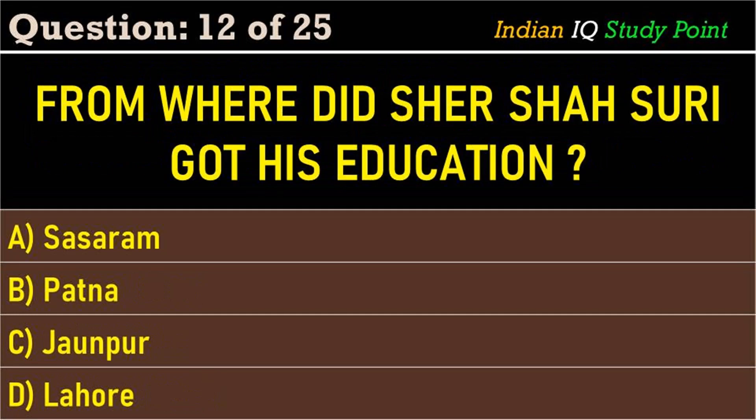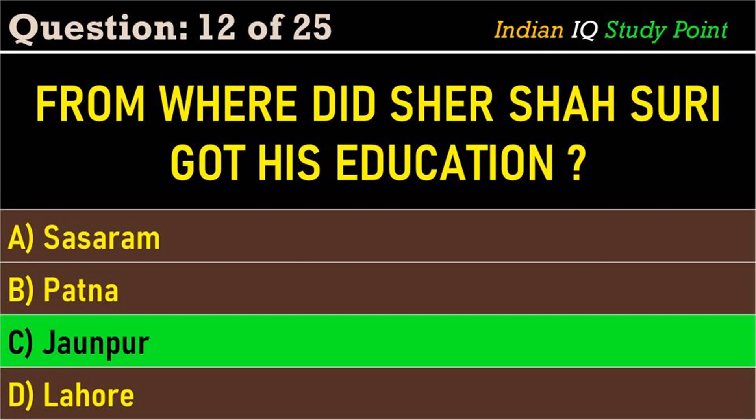Coming to the next question: from where did Sher Shah Suri get his education? Option A. Sasaram, B. Patna, C. Jahanpur, D. Lahore. And the correct answer is Option C. Jahanpur.